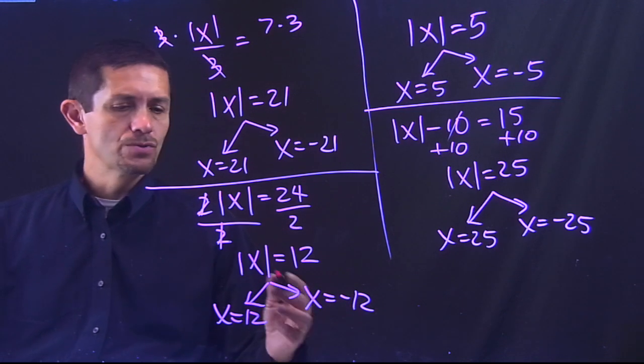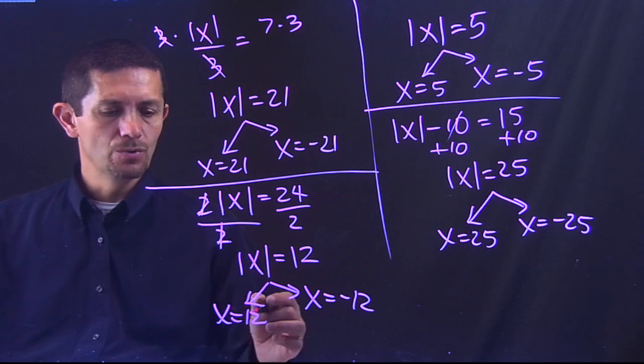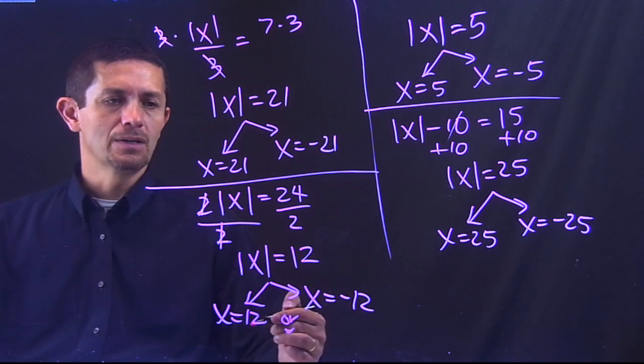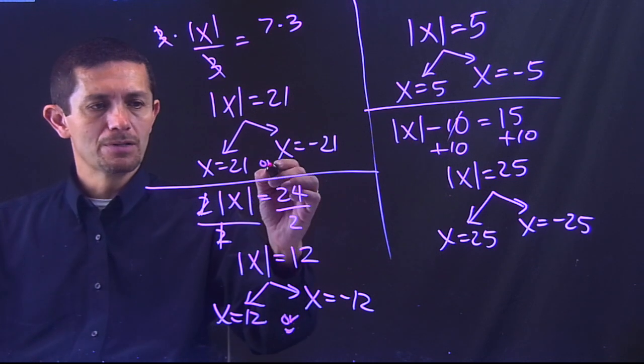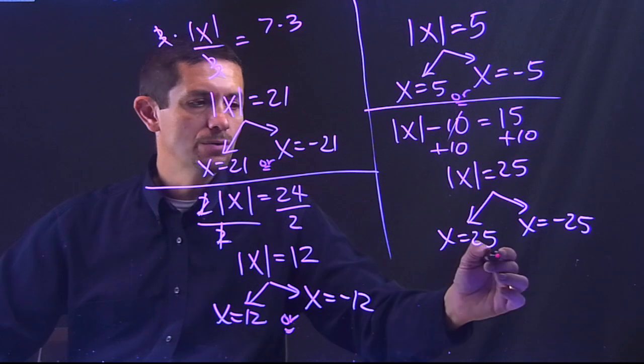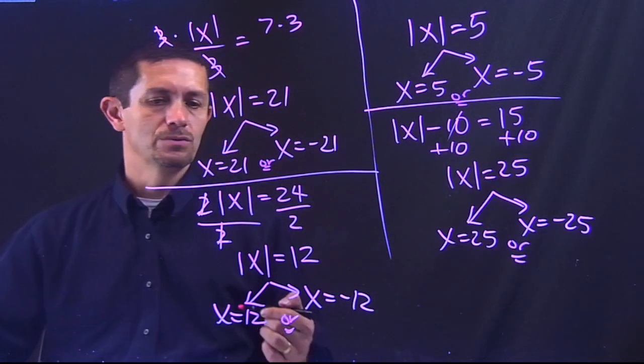Technically, when you solve these absolute value equations, you have x equals 12, or x equals negative 12. So, I was missing the or in all of those answers. You have to write those different answers.